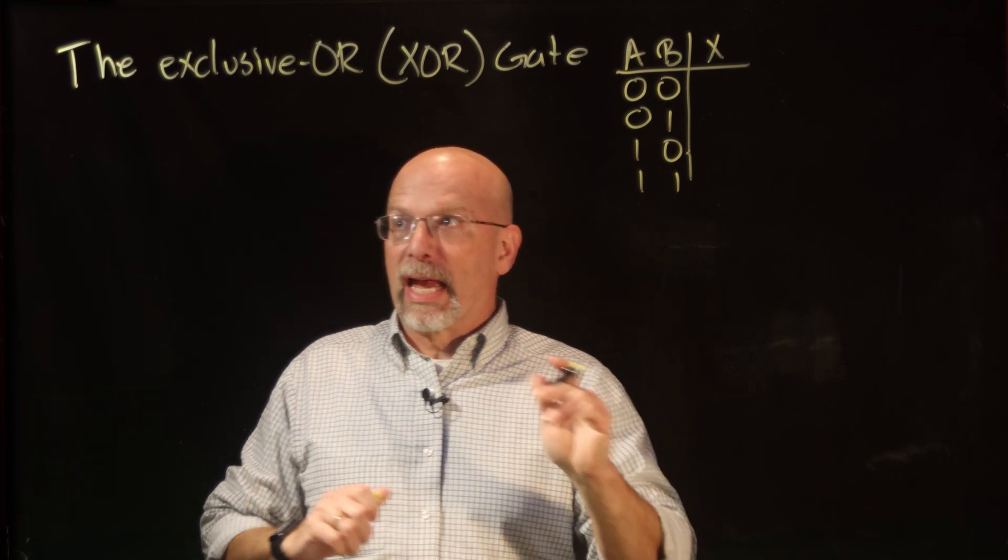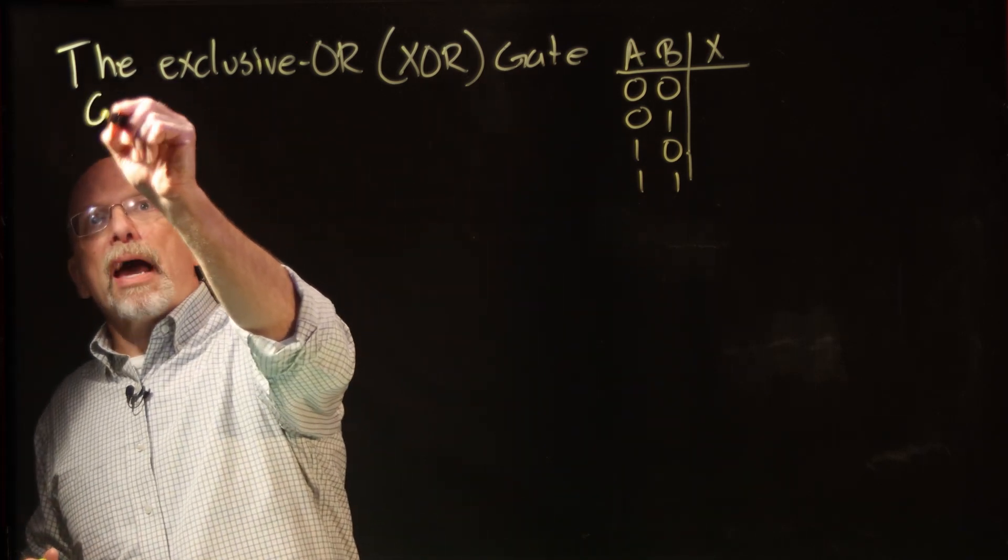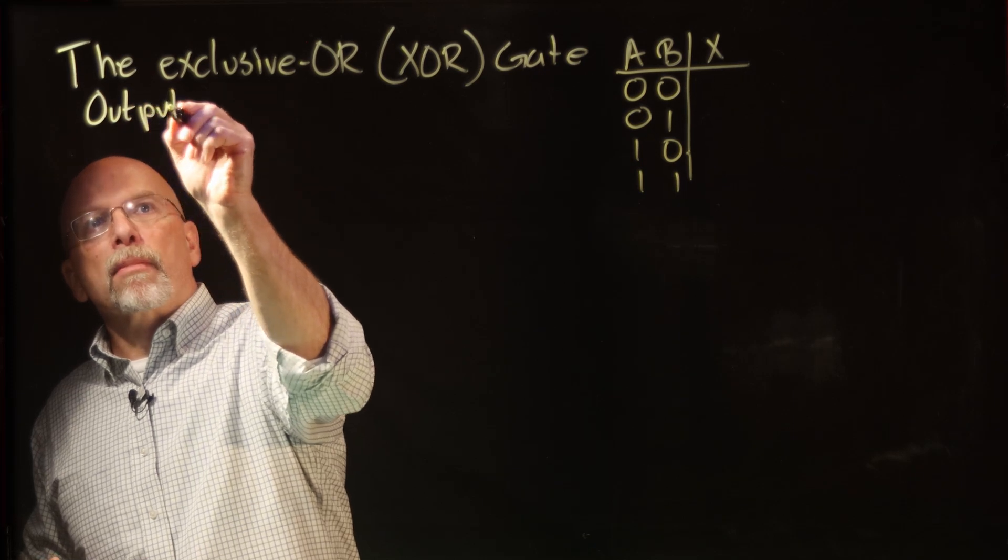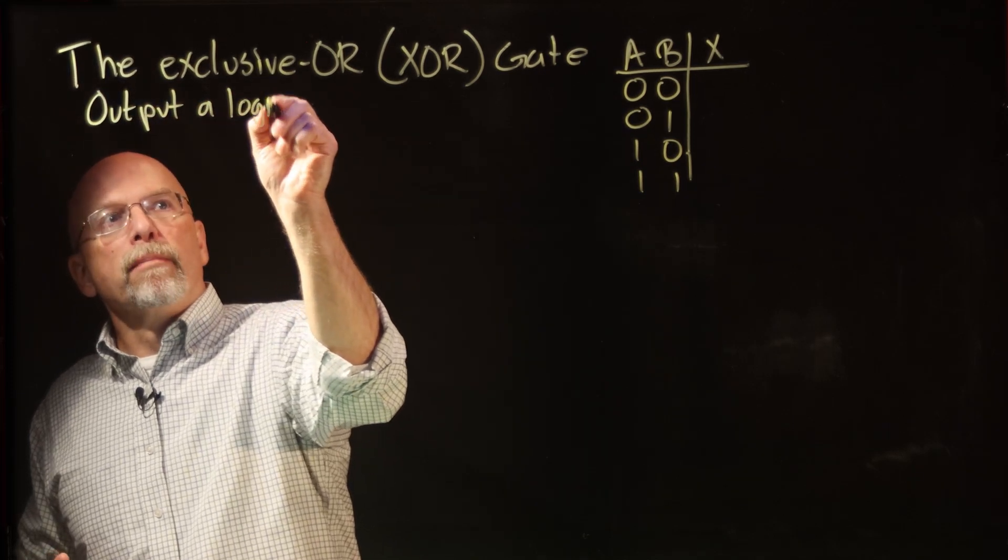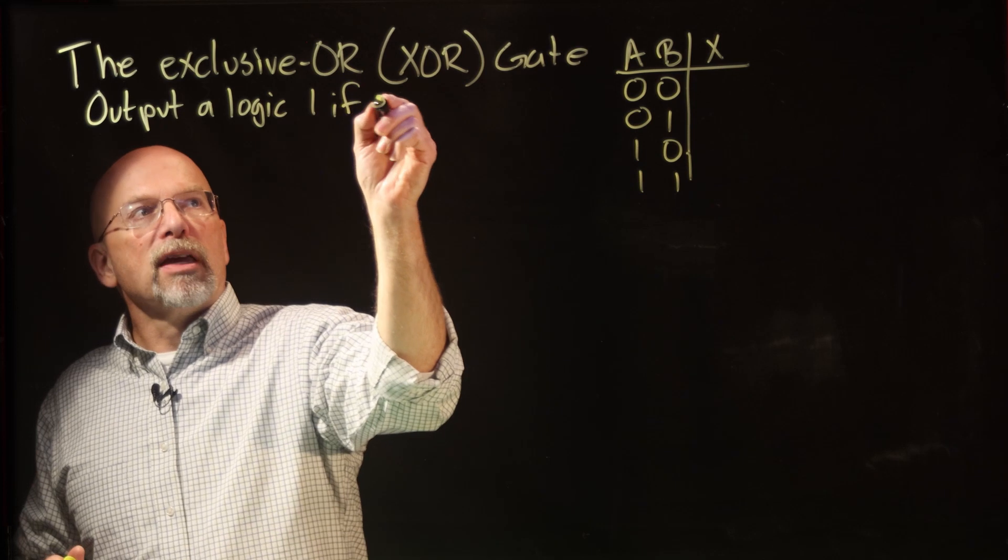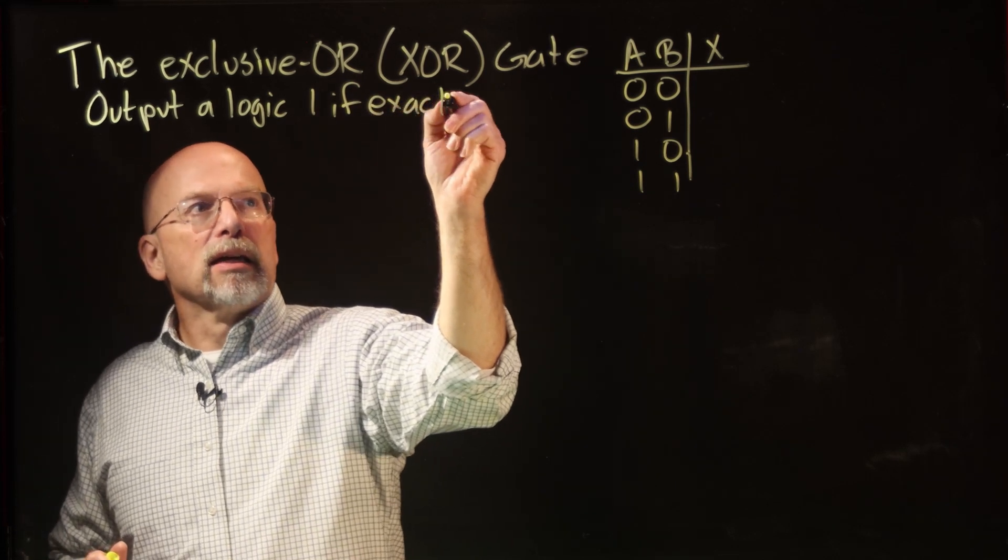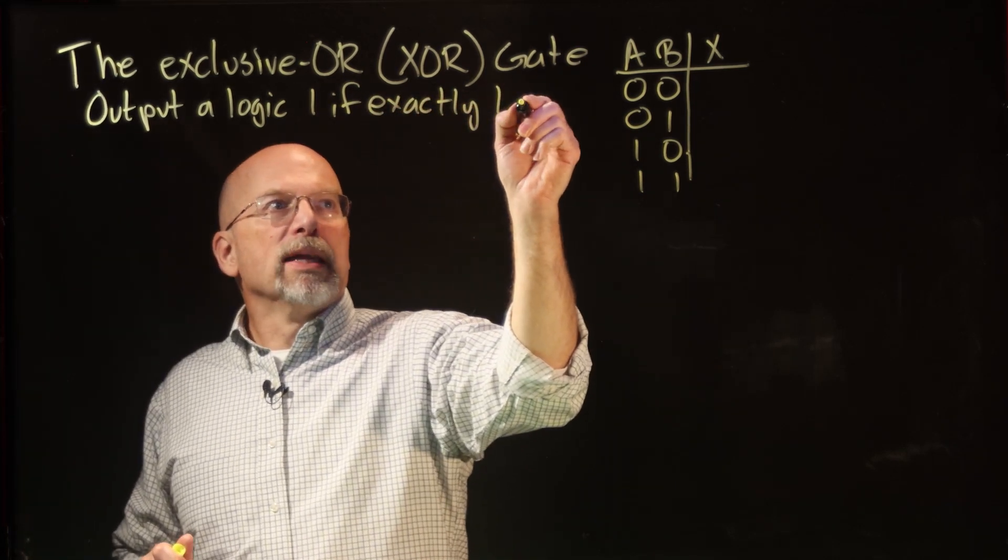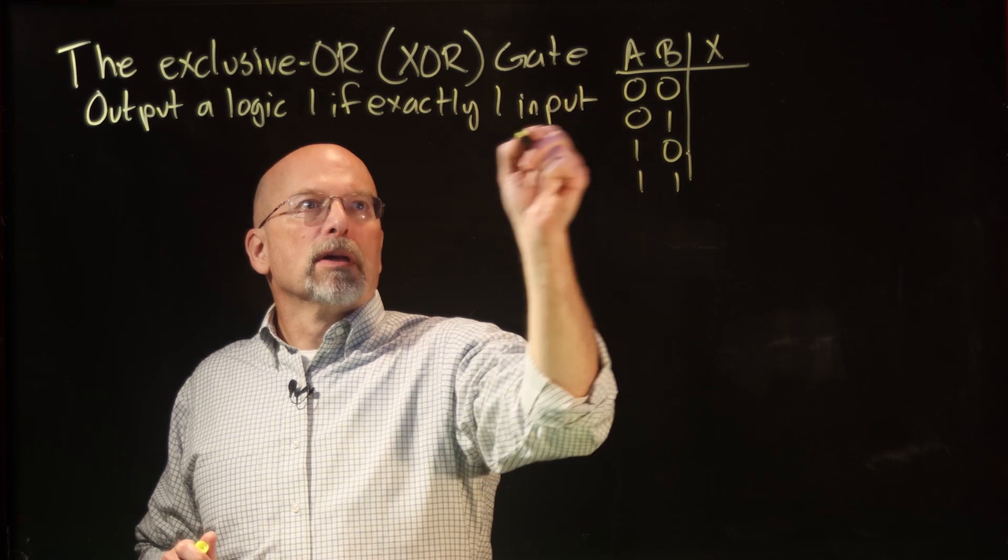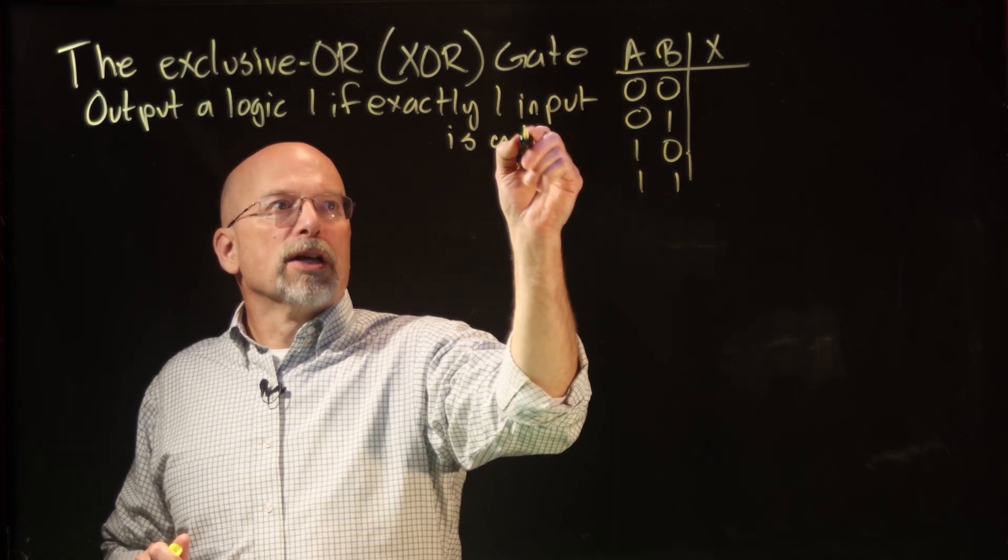The definition we're going to use for the two-input exclusive-OR gate is this: output a logic 1 if exactly one input is a logic 1.